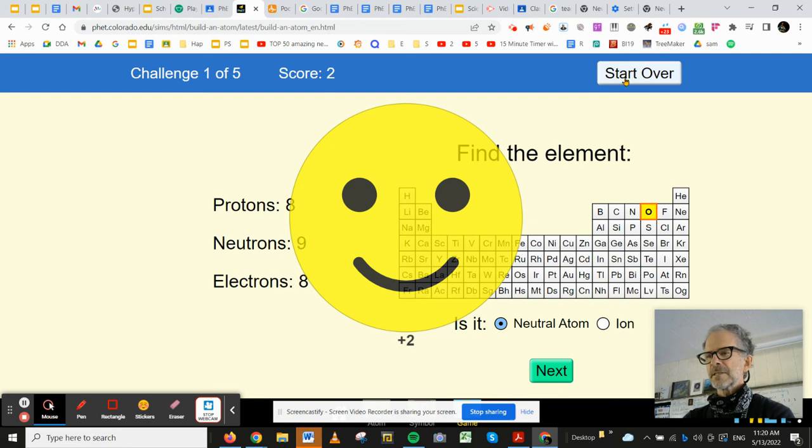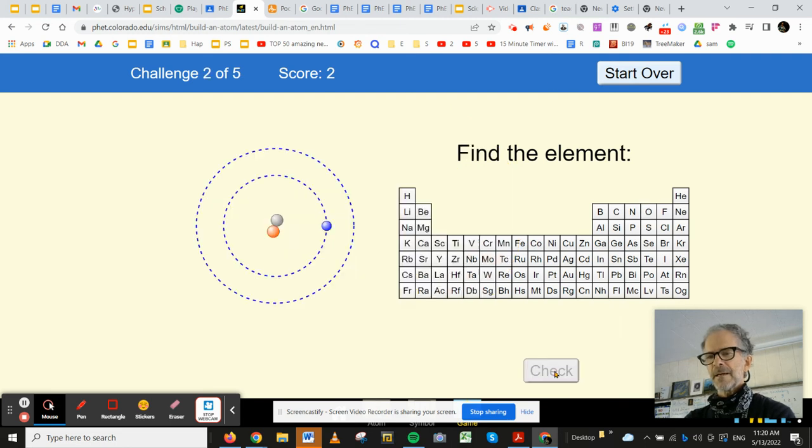They're going to ask you to do this five times. Why don't we just keep going here. Now they've given me a model of atom. It has one proton, that means it's hydrogen. And it has an even number of protons and electrons so it's neutral.